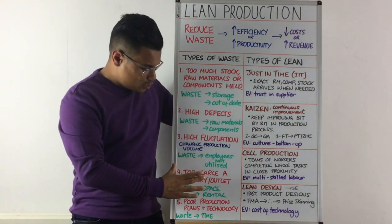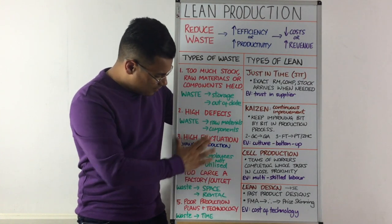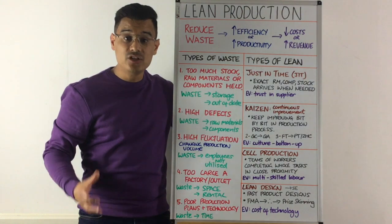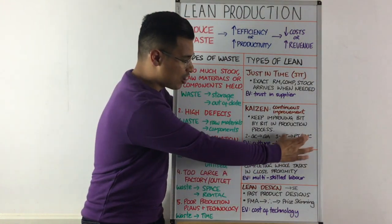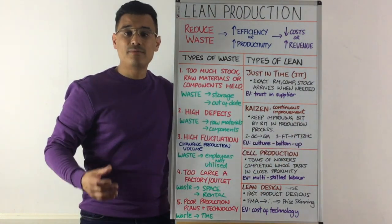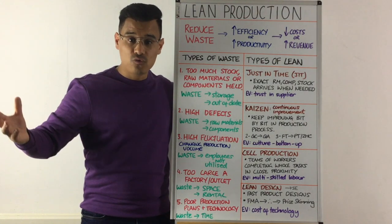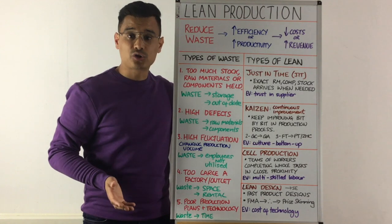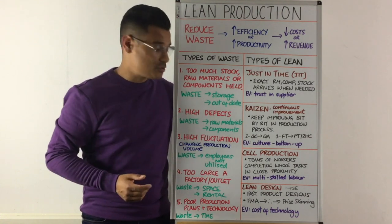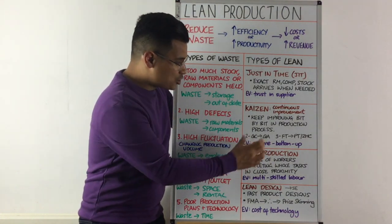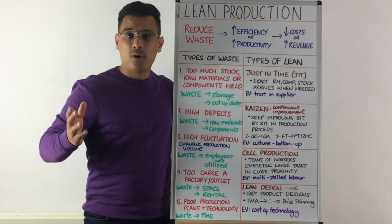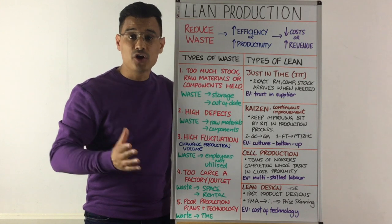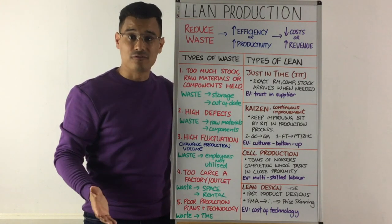Also, it could be that you've got the high fluctuation issue and you've got lots of employees that are often not fully utilised. So maybe you could change the structure of their employment contracts — move away from having all full-time workers to some part-time workers or zero-hour contract workers, but there are ethical issues there. The evaluation for Kaizen is that it's about a bottom-up culture, so if that bottom-up culture isn't there, Kaizen won't work — you need your employees to be well on board with it.